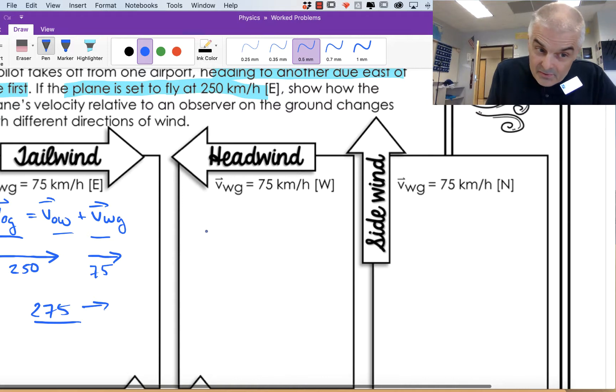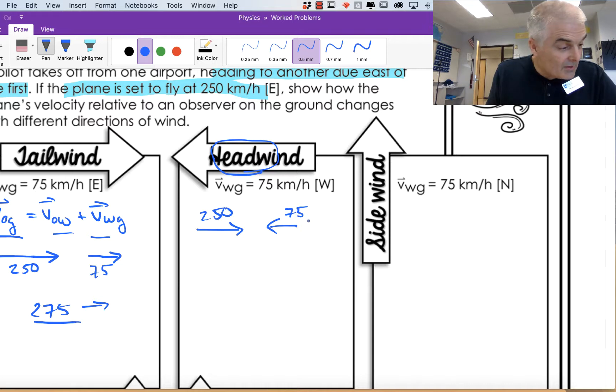But this is the worst. Let's say he's going 250. This is a headwind, 250 here, and he's fighting a 75 kilometer per hour headwind. You're going to subtract the two: 250 minus 75. That's 175 kilometers per hour to the east because he is going in the opposite direction.